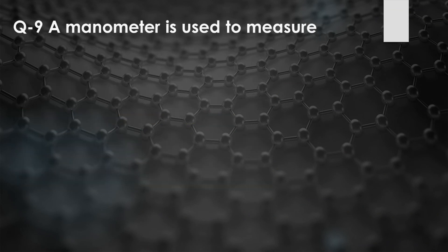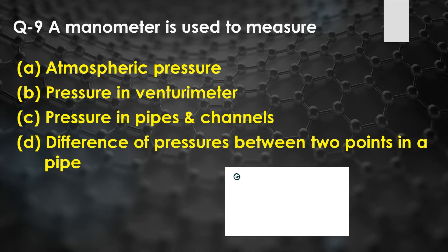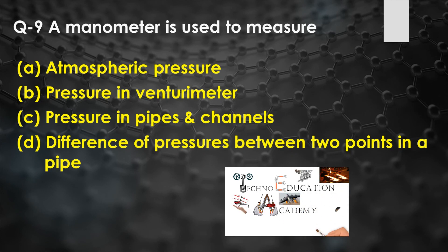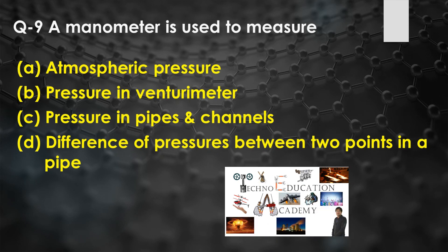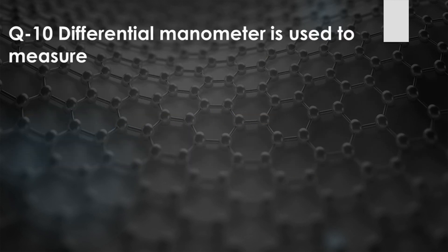Question number nine: A manometer is used to measure — option A: atmospheric pressure, option B: pressure in a venturimeter, option C: pressure in pipes and channels, option D: difference of pressure between two points in a pipe. A manometer is used to measure the pressure in pipes and channels. The right answer is option C.